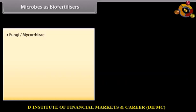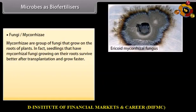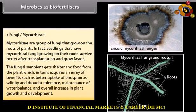Fungi or mycorrhizae. Mycorrhizae are a group of fungi that grow on the roots of plants. Seedlings that have mycorrhizal fungi growing on their roots survive better after transplantation and grow faster. The fungal symbiont gets shelter and food from the plant, which in turn acquires benefits such as better uptake of phosphorus, salinity and drought tolerance, maintenance of water balance, and overall increase in plant growth and development.